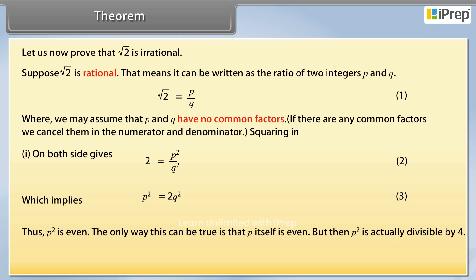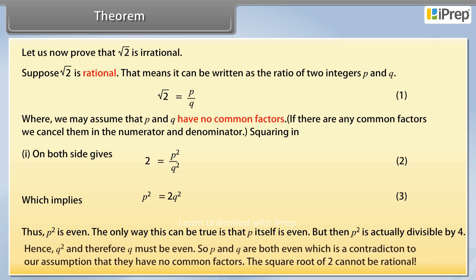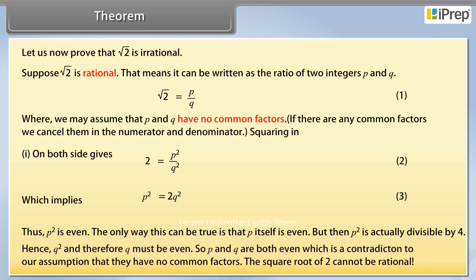Thus P squared is even. The only way this can be true is that P itself is even. But then P squared is actually divisible by 4, hence Q squared and therefore Q must also be even. So P and Q are both even, which is a contradiction to our assumption that they have no common factors.